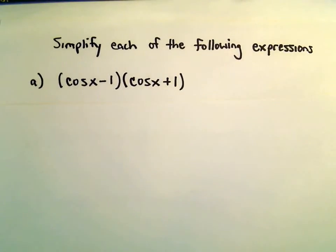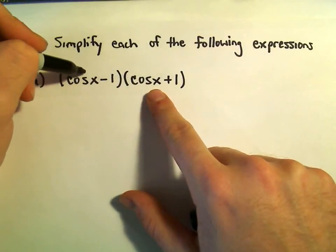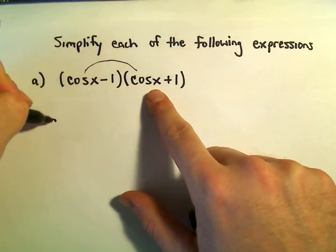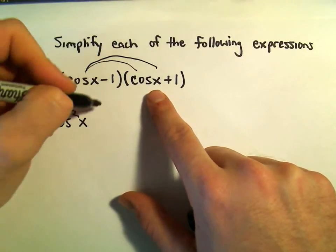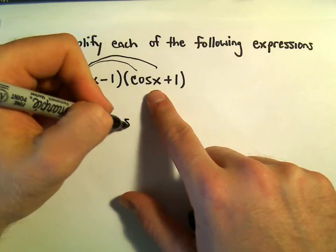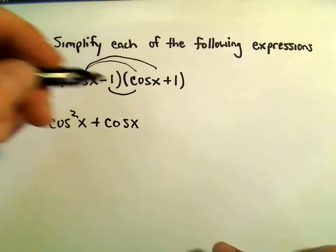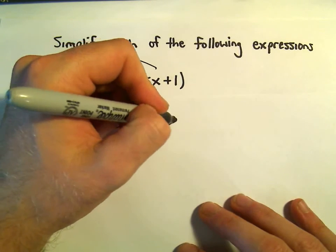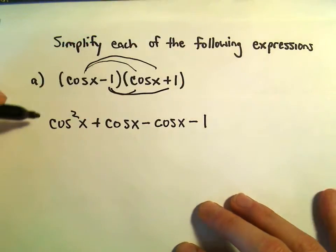In the first one we have cosine x minus 1 times cosine x plus 1. If we distribute this out, we get cosine times cosine, which is cosine squared x. We get cosine times positive 1, which is positive cosine x. Then negative 1 times cosine x, which is negative cosine x. Then negative 1 times positive 1, which is negative 1.